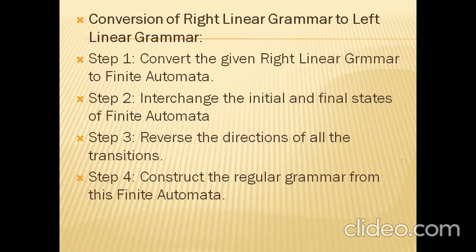The first step is to convert the given Right Linear Grammar into a Finite Automaton. Finite Automata is a diagrammatic representation of the given expression. The second step is to interchange the Initial and Final States of the Finite Automaton — the Starting State becomes the Final State and the Final State becomes the Starting State. The third step is to reverse the directions of all transitions.